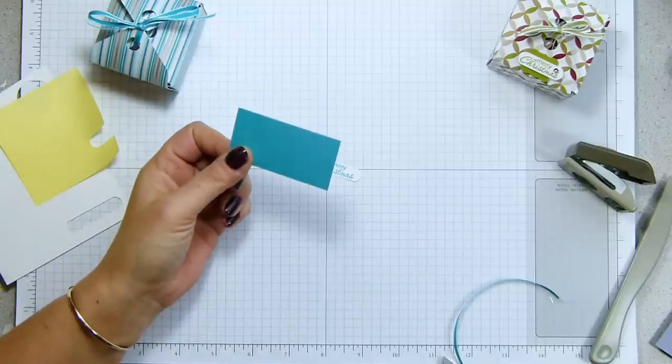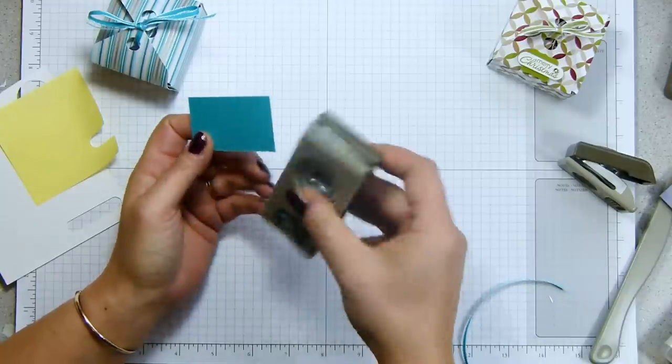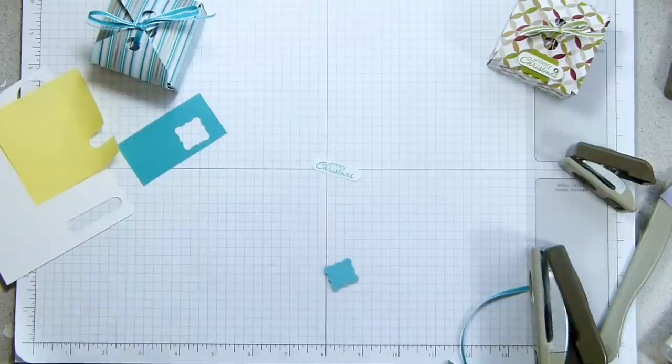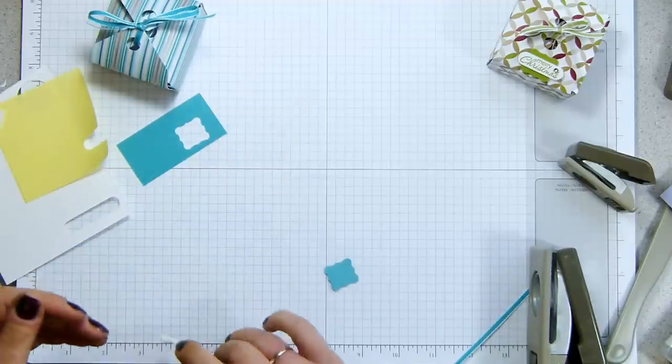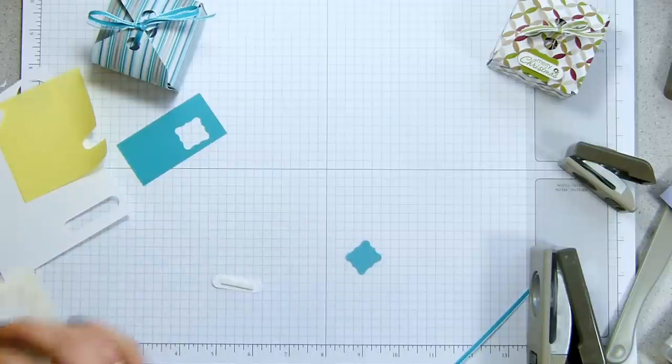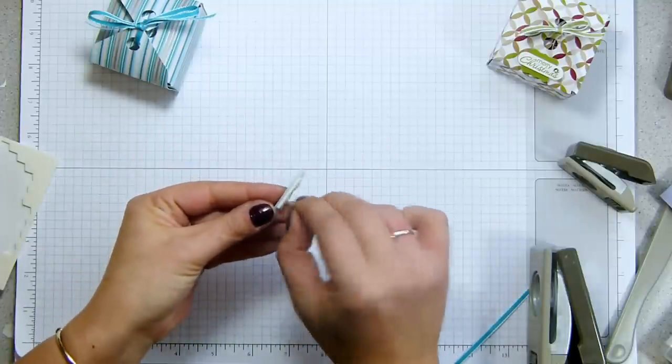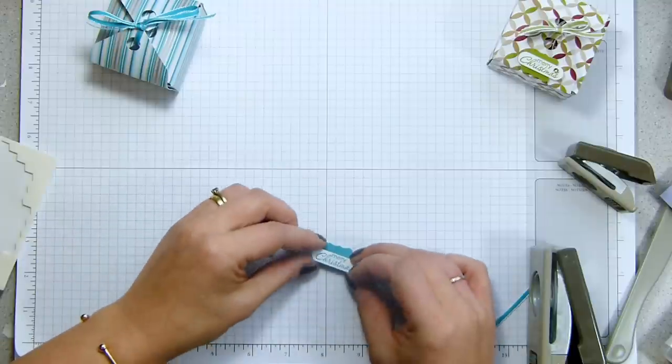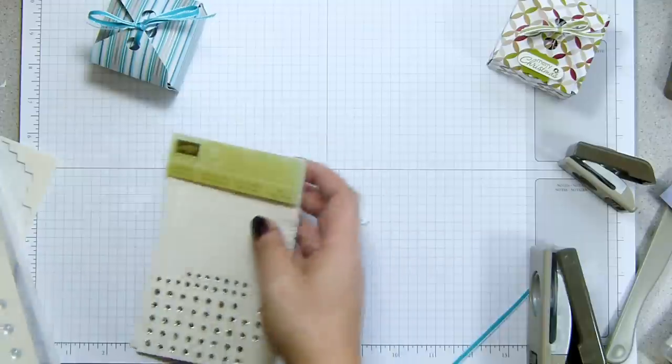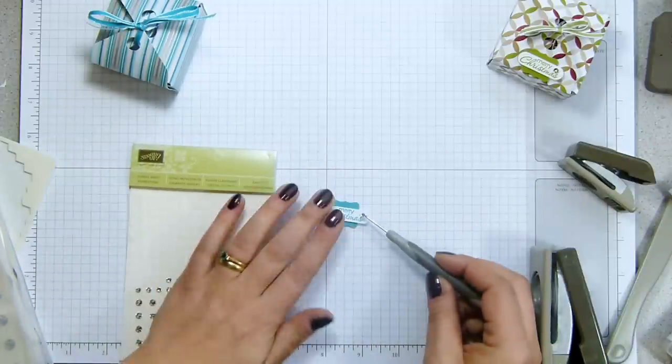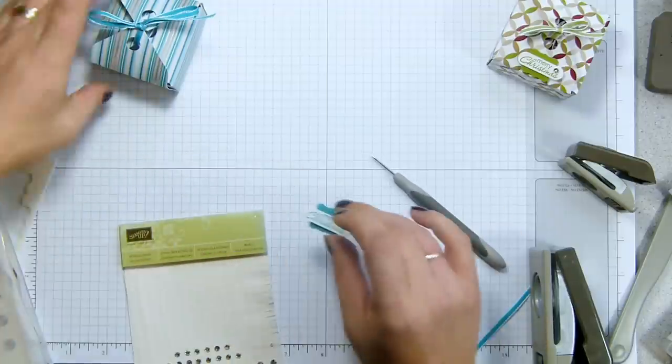Tiny little, oh I nearly threw that away. Tiny scrap of Bermuda Bay cardstock. And my, I've put it down somewhere. What have I done with that? Here it is. My Petite Curly Label punch. Pop that out. Grab some dimensionals. I've got some of the nickel dimensional edges to go behind the sentiment. One on the back there. Whoops. A regular one on the back of that. Layer it up. And I've got my rhinestone crystals. Little one up there just to finish it off. And then that popped on there.